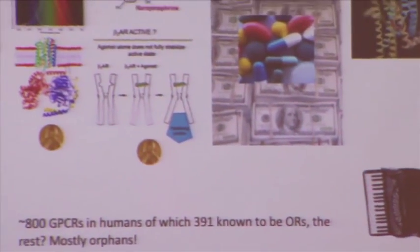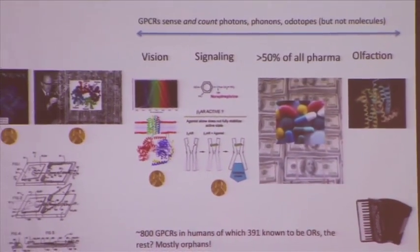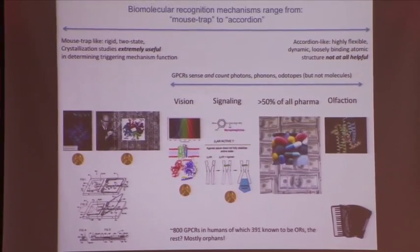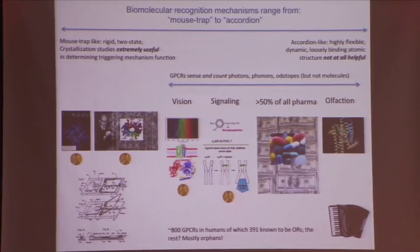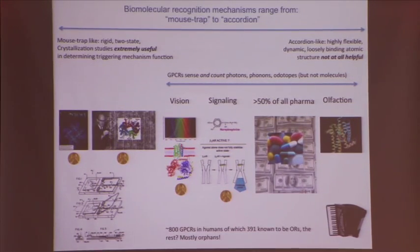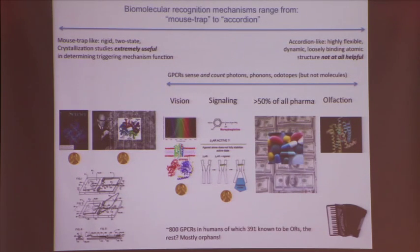In our quest to understand biomolecular recognition, we built some noses, did some molecular dynamic simulations, and did some information theory. A little background on what it means to biomolecularly recognize: it is on a spectrum — not the same mechanism for everything. The general rule is if the thing that's recognizing something else is easy to crystallize, then you're sort of in the mousetrap-like regime.